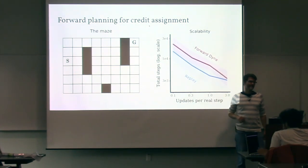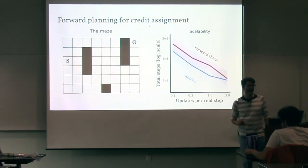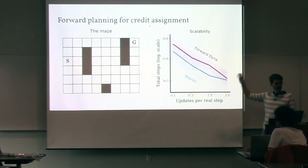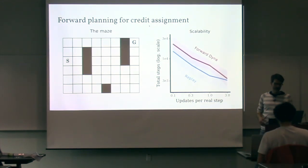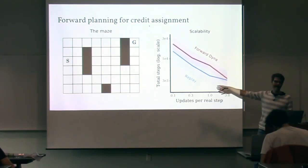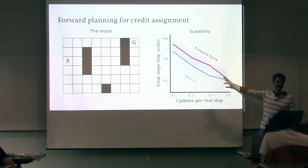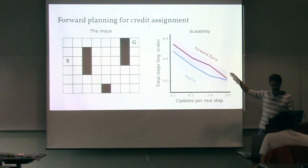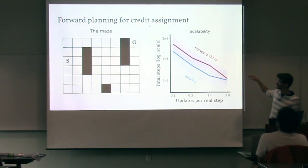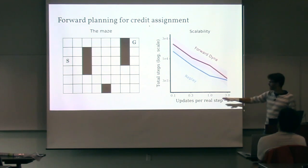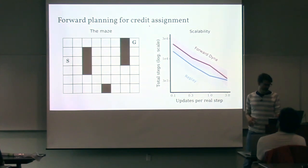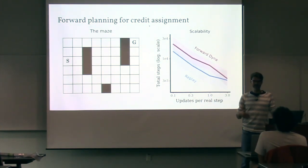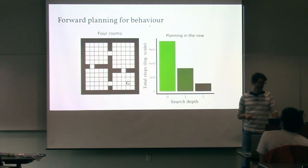That 'can only hurt' part isn't satisfying because we believe models should be useful. So we investigated: when do they help? We had a few intuitions — maybe what SIMPLE is doing is not the most effective way to use your model. It's planning forward from real states, and replay may be a more accurate model for exactly those states. We did a small-scale experiment on a maze — performance on the y-axis is total steps to complete 25 episodes, so lower is better — and replay kind of dominates forward Dyna across different numbers of planning updates per real step.